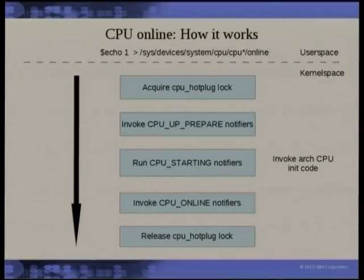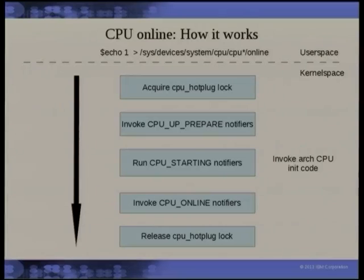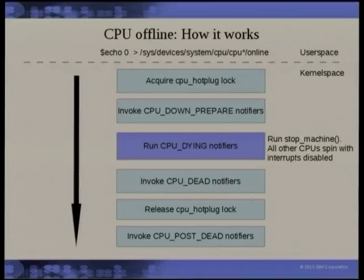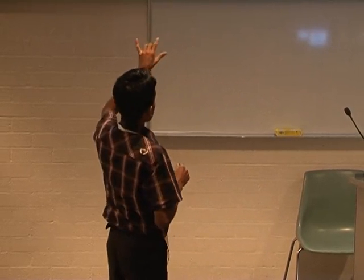You can try this on your laptops and desktops: echo 1 to the CPU online file to bring a CPU online, echo 0 to take it offline. The task that does this acquires the CPU hotplug lock — a mutex — then invokes the notifiers in succession. During CPU_STARTING, the init sequence runs on the CPU and finally the lock is released. The CPU offline operation sends CPU_DOWN_PREPARE, CPU_DYING, and similar notifications. Notably, the CPU_DYING notifiers run in the context of stop machine.